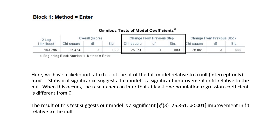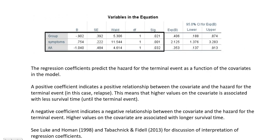The result of our test suggests that the model is a significant improvement in fit relative to the null. The regression coefficients demonstrate the prediction of the hazard for the terminal event as a function of the covariates. A positive coefficient indicates a positive relationship between the covariate and the hazard for relapse, meaning higher values on the covariate are associated with less survival time. A negative coefficient indicates higher values are associated with longer survival time.